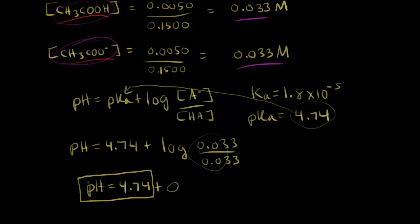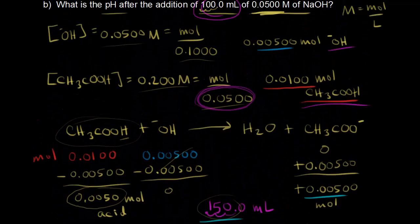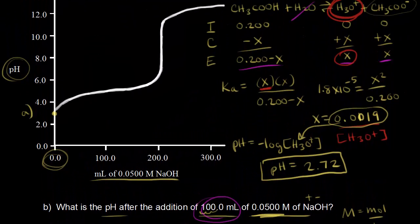This is the half-equivalence point — we've neutralized exactly half the acid and half the acid remains. At the half-equivalence point, pH = pKa = 4.74. On the titration curve, at 100 mLs of base added, the pH is approximately 4.74, and this is point B on the curve.